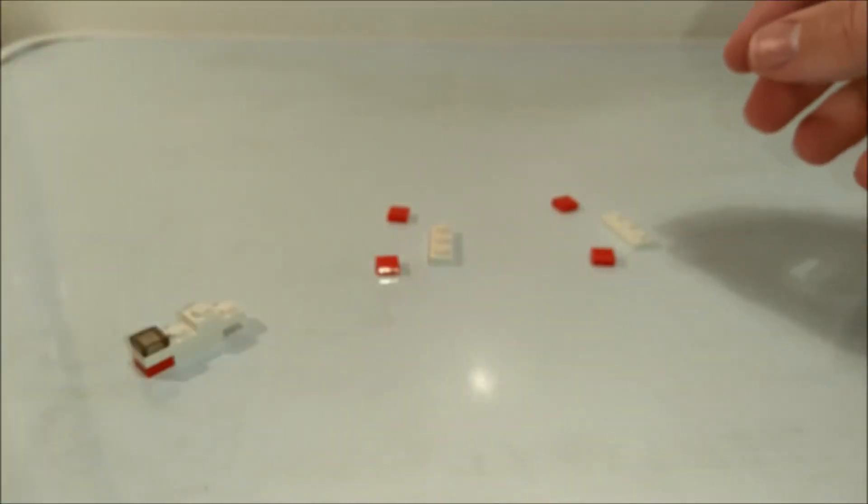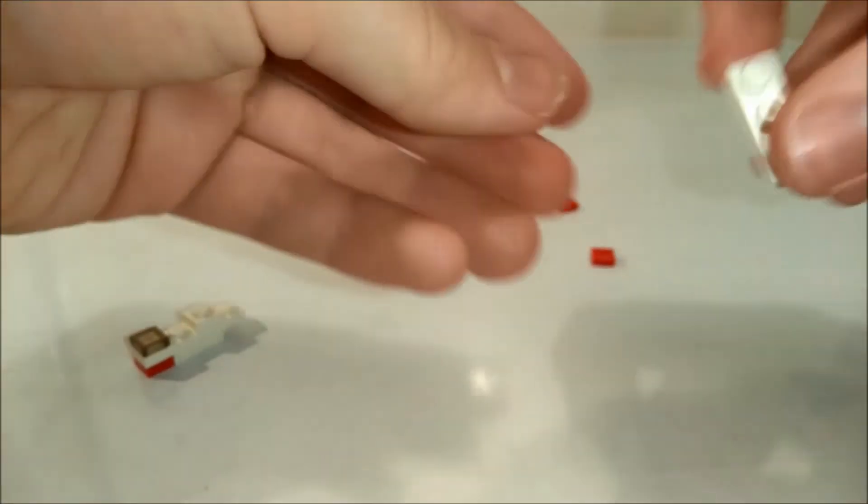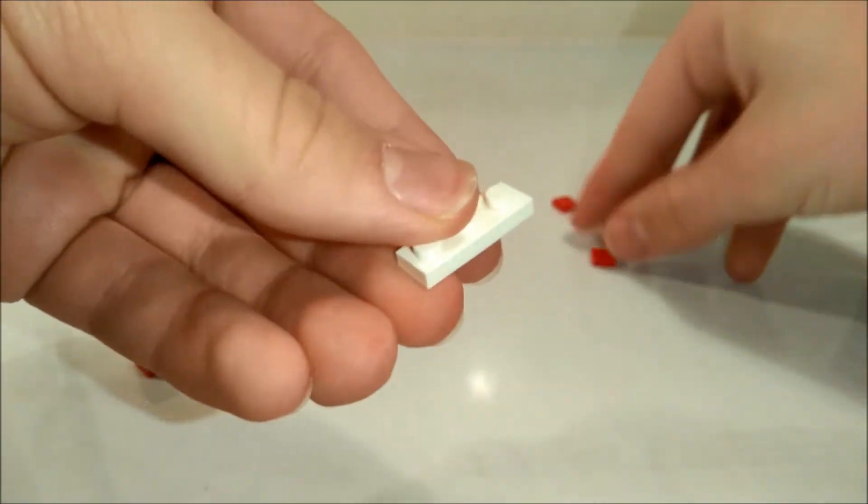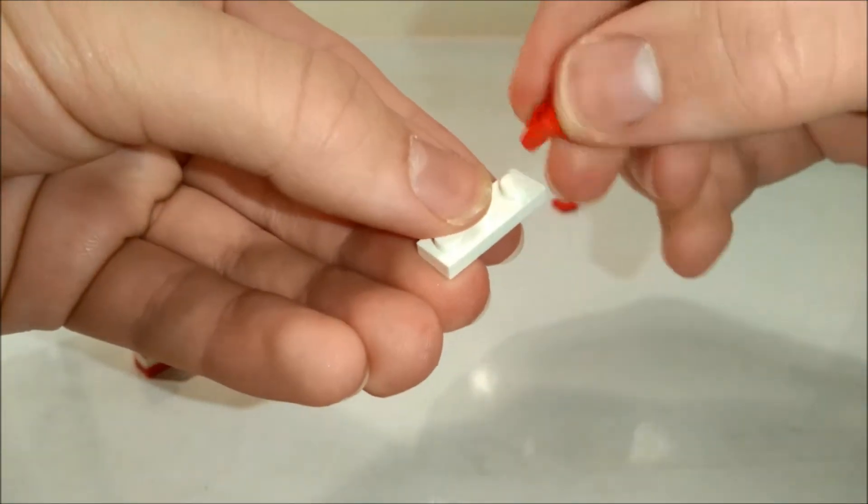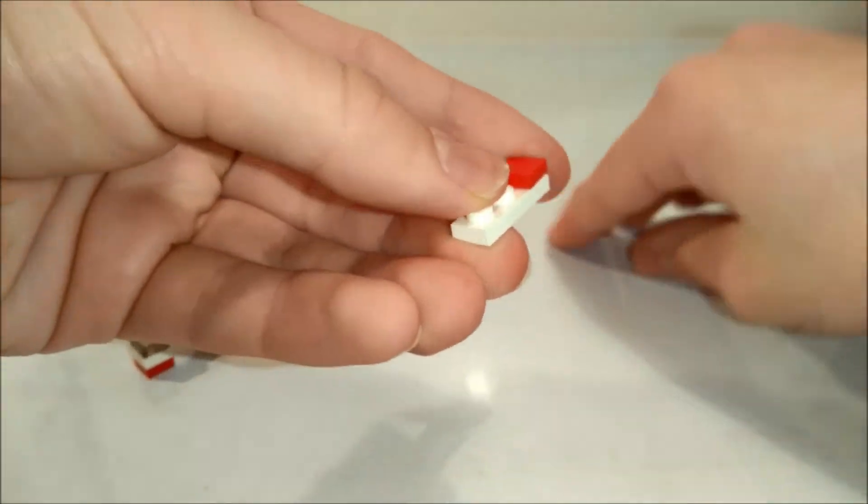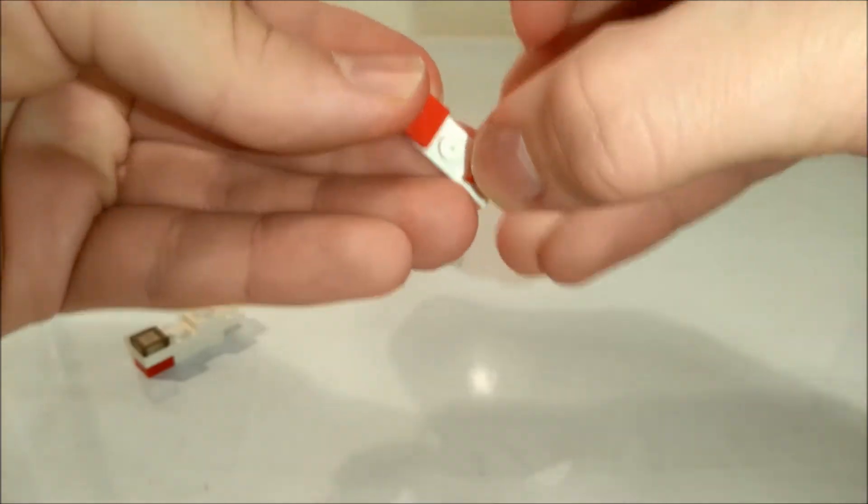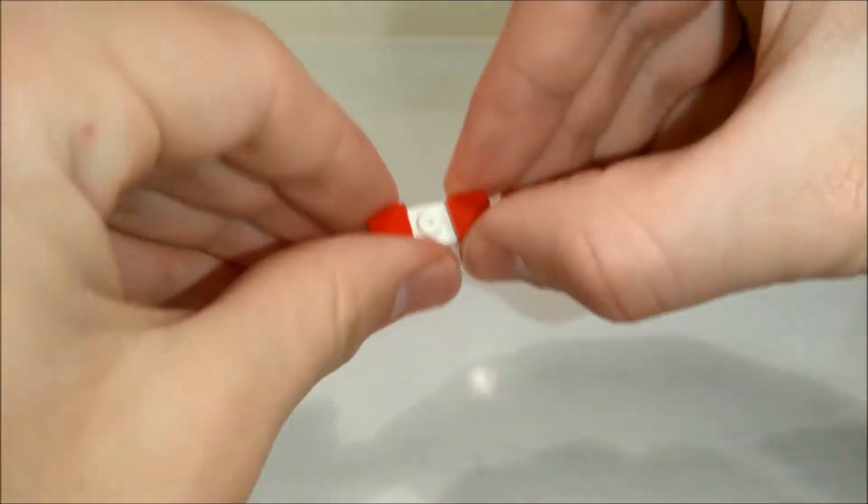Now we're going to make the wings that come off the side, that have the hose pipes on, if you like. So we're going to take one of these, and two flat 1x1 red tiles, like that.